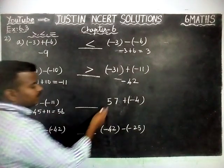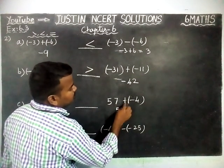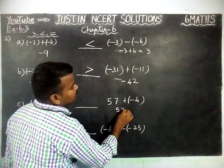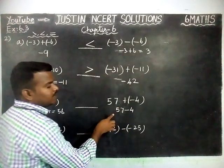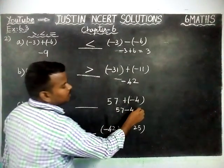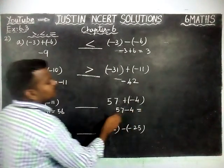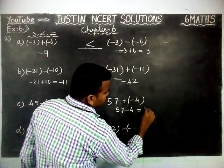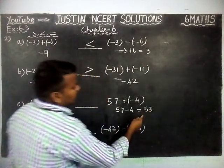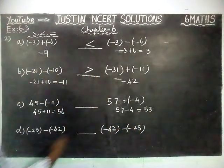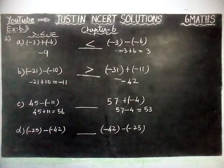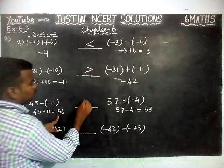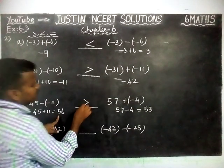Then right hand side: 54 plus into minus gives minus 4. So 57 minus 4 — we have to find the difference. The difference is 53. Now comparing: 56 versus 53. Since 56 is the greatest number, we use the greater than symbol.